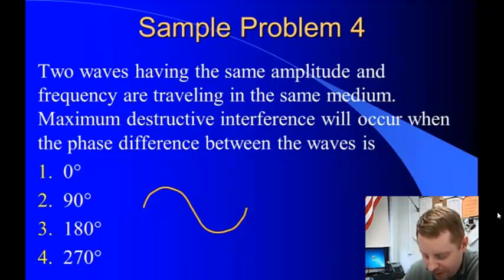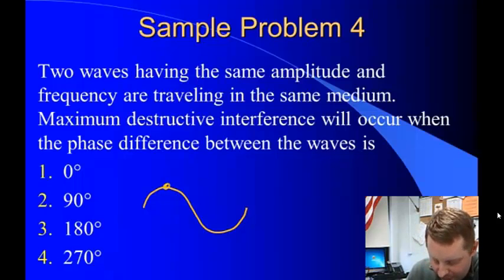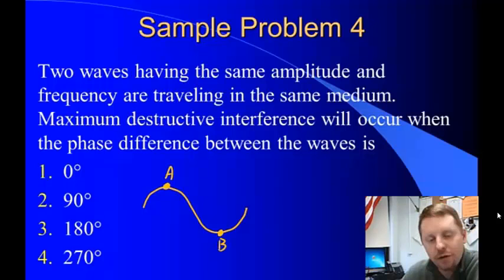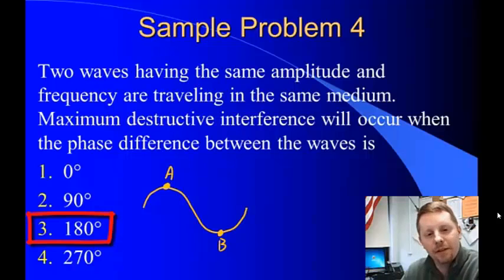So if they are 180 degrees out of phase, that could be a point like this, A, and a point like this, B. Those two are 180 degrees out of phase. That would lead to maximum destructive interference. So the correct answer here, we get maximum destructive interference at 180 degrees of phase difference.